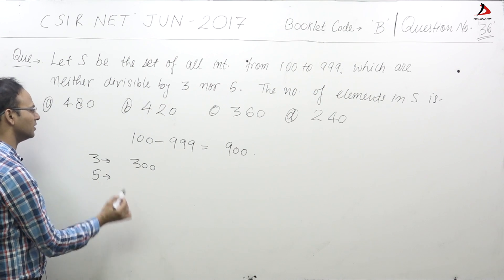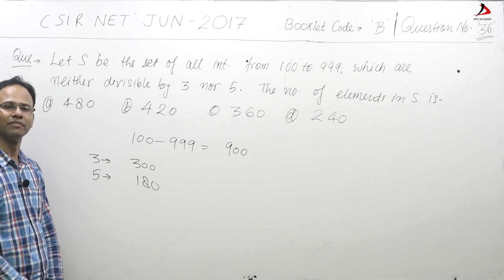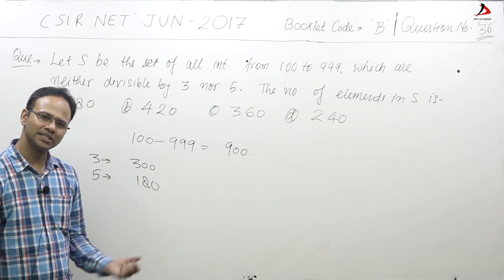Numbers divisible by 5: just divide 900 by 5, you will get 180 numbers.